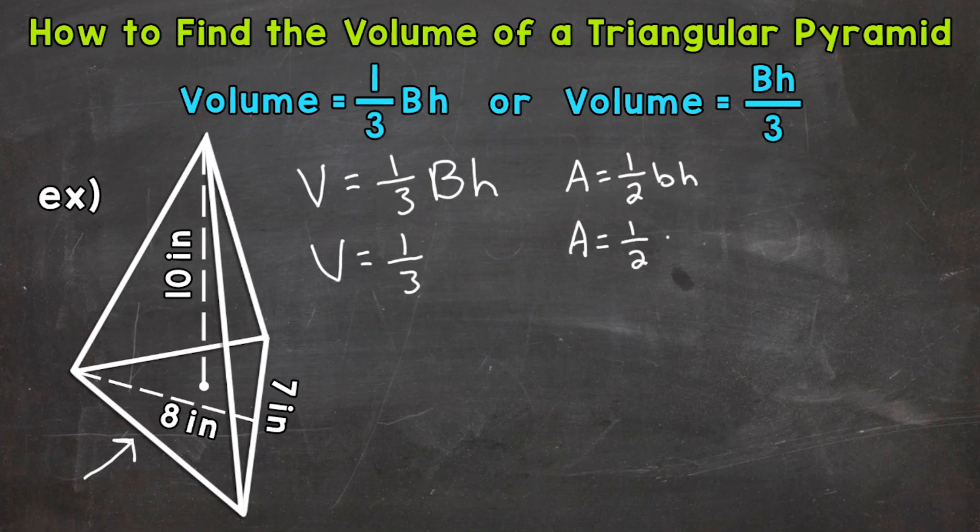So let's plug in our base of the triangle and the height. So 1 half times the base, which is 7 inches, times the height of 8 inches. So we know that 7 times 8 is 56. So let's break this down here. And we'll do 1 half times 56 or 1 half of 56. And that gives us an area of 28.